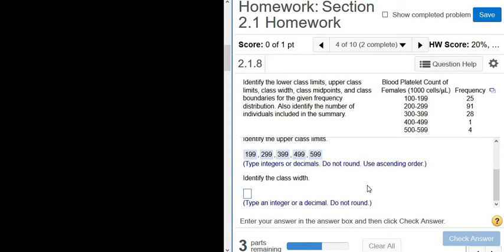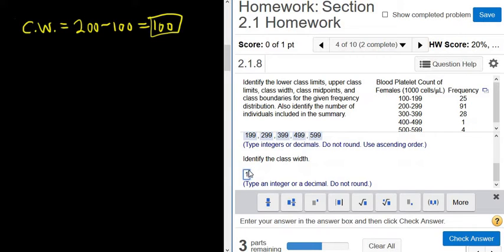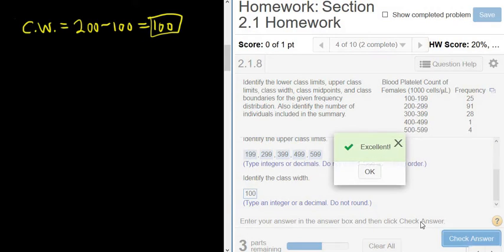Now what's the class width? So to find the class width, all you do is you subtract. The class width is just going to be 200 minus 100. You can just subtract any two consecutive lower class limits or upper class limits. You can do 299 minus 199, that also gives you 100. Or you can do 400 minus 300, that also gives you 100. So that will be the class width. I just called it CW to abbreviate it, so 100. Let's try it. Beautiful stuff.